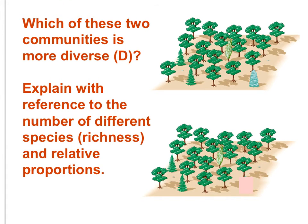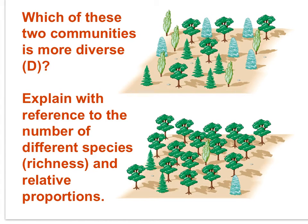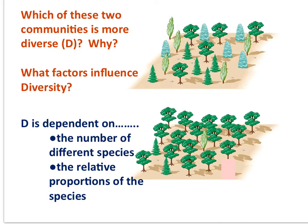Once again, examine the upper and lower images carefully. Both locations have four species, so based on species richness alone they would have the same diversity. But we must consider evenness as well. The top location would have greater diversity because there is more evenness among the four species — the four species are more equally represented, with more proportional relative abundance. The community in the lower image is dominated by just one of the four species. So when we quantify diversity, it is dependent on both species richness and the relative proportions of each species, known as evenness.